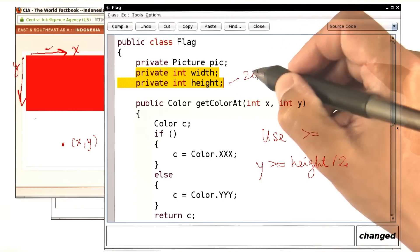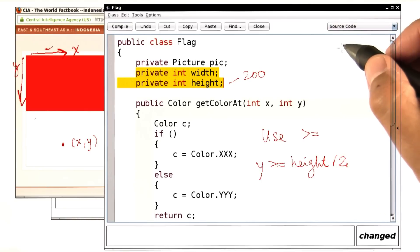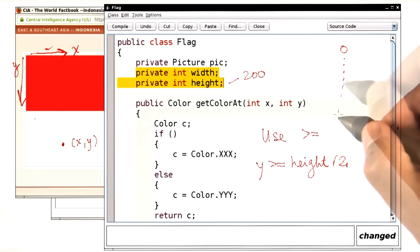Let's assume that the height is 200. In that case, the y values can be from 0 to 199. So if they're from 0 to 99, then I want red. And if they're from 100 to 199, then I want white.